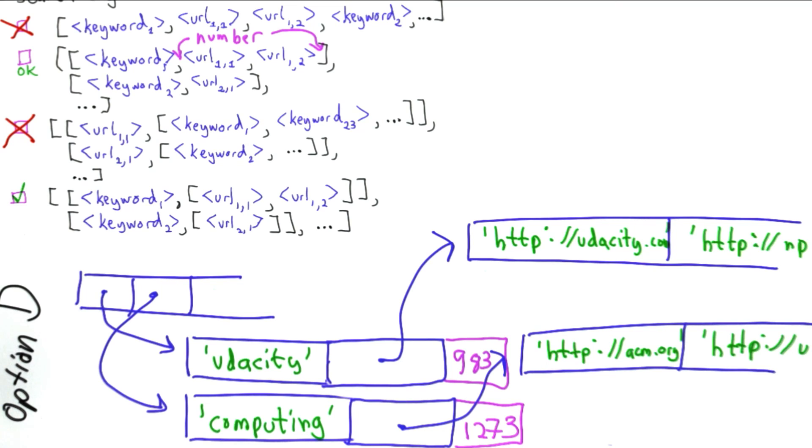Option D gives us a lot more structure. By keeping all the URLs in a list, we can treat that as a list and do things with it much more easily than if it's combined with a keyword. And we can also do things like add extra elements if we want to keep track of the number of times someone searches for that keyword or any other information we think of later that would be useful to add to our structure. So that's why I think option D is the best option.